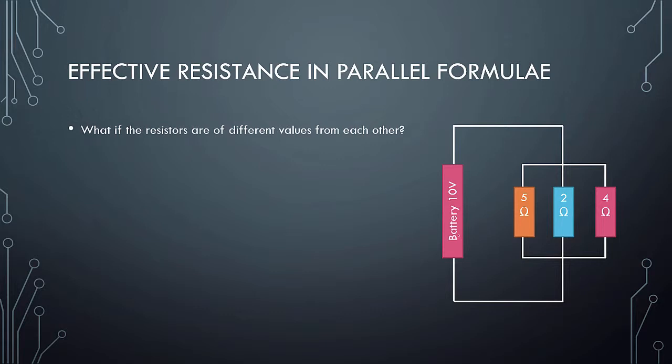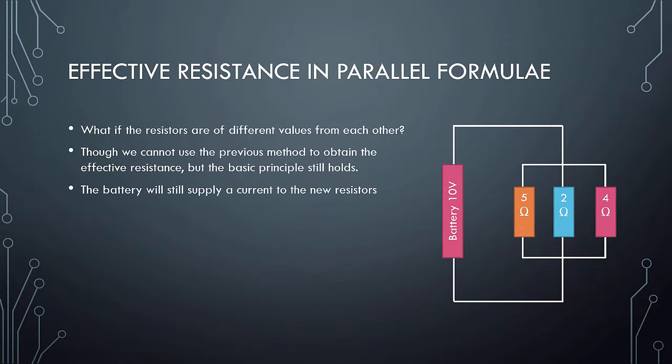But what if the resistors are all different values from each other, like this example: 5, 2, and 4? Though we cannot use the previous method to obtain the effective resistance, the basic principle still holds. The battery will still supply current to the new resistors.